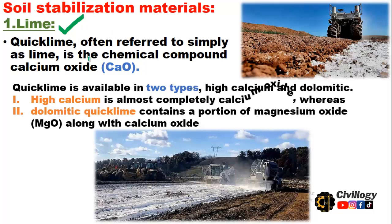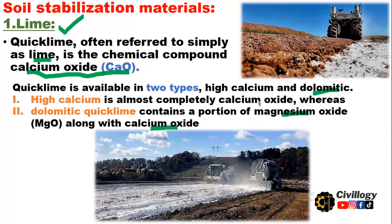Quicklime, often referred to simply as lime, is a chemical compound with the formula CaO — calcium oxide. Quicklime is available in two types: high calcium and dolomitic. High calcium quicklime is almost completely calcium oxide, whereas dolomitic quicklime contains a portion of magnesium oxide (MgO) along with calcium oxide.